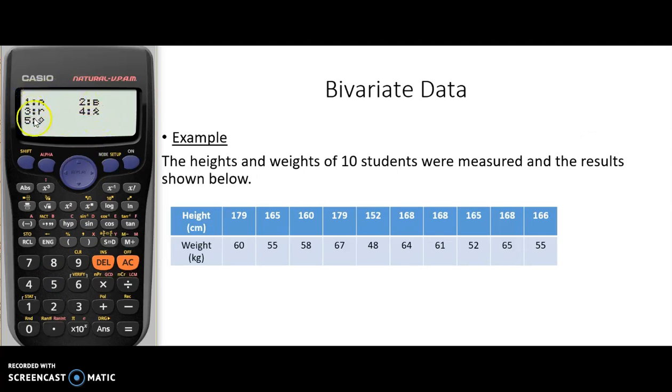We have five selections there. R is our correlation coefficient, so if we press three, that equals and we end up with our correlation coefficient there. You should end up with that. What I want you to make sure is you can enter that data and end up with the same result.